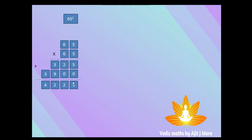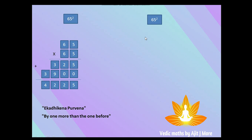Now let's see the Vedic math trick. The sutra we are going to follow is called Ekadhikena Purvena. The English translation is 'one more than the previous' or 'one more than the one before.'